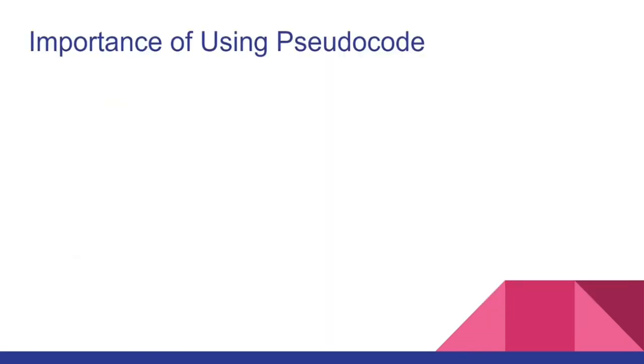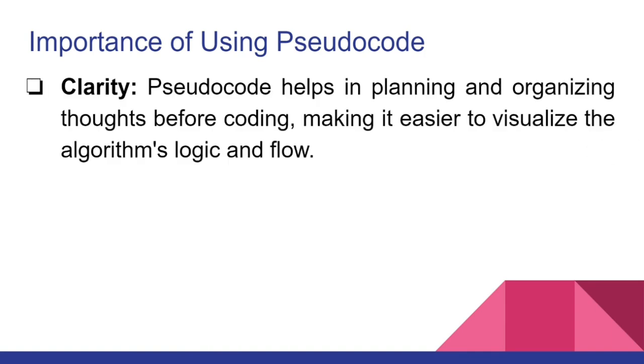I want you to pause the video and tell me one or two importance of using pseudocode according to the concepts we gave. If you get it wrong, don't be shy, just enhance yourself on it. One of the importance of pseudocode is clarity. Pseudocode helps in planning and organizing tasks before coding, making it easy to visualize the algorithm logic and flow.